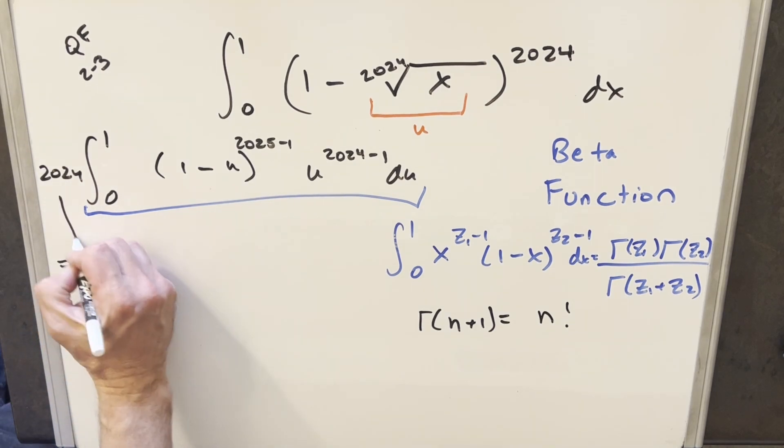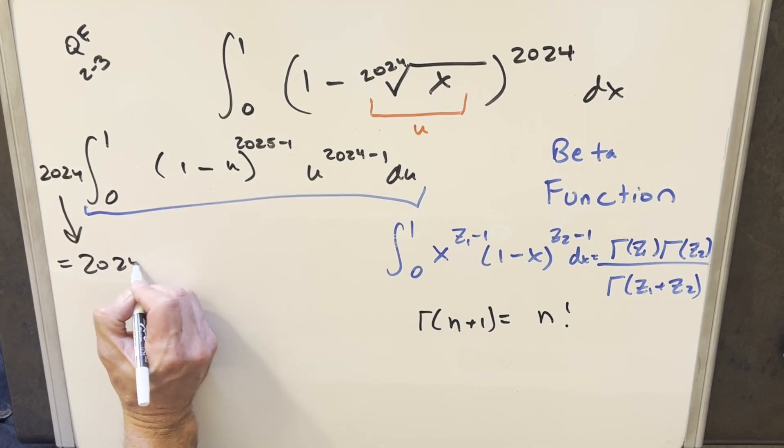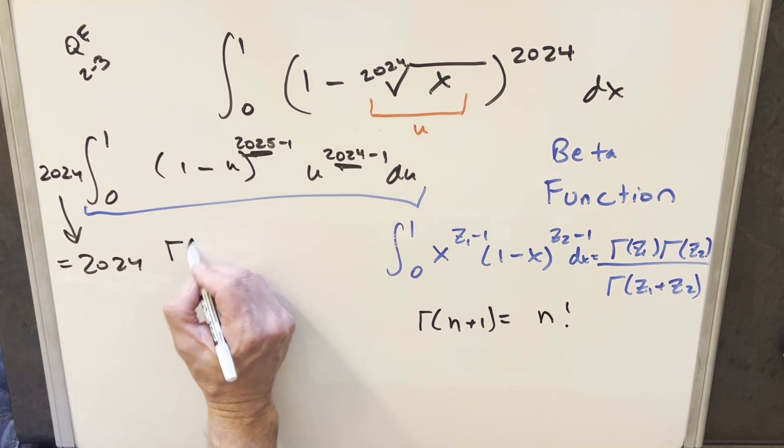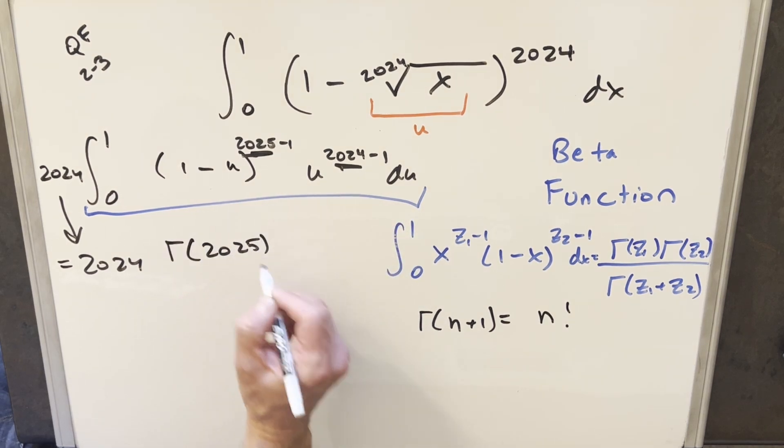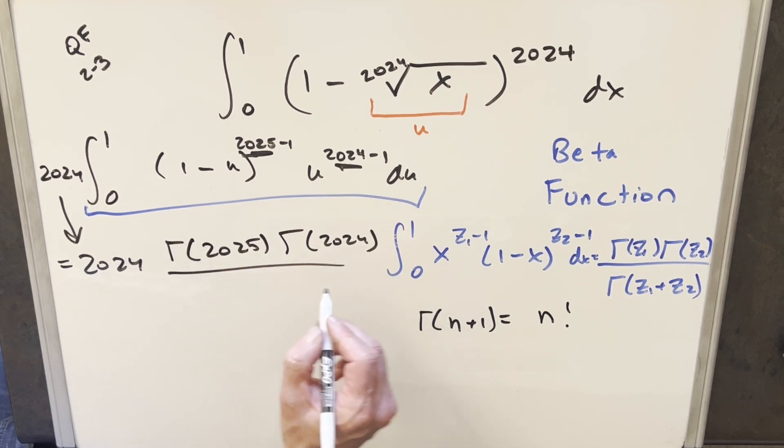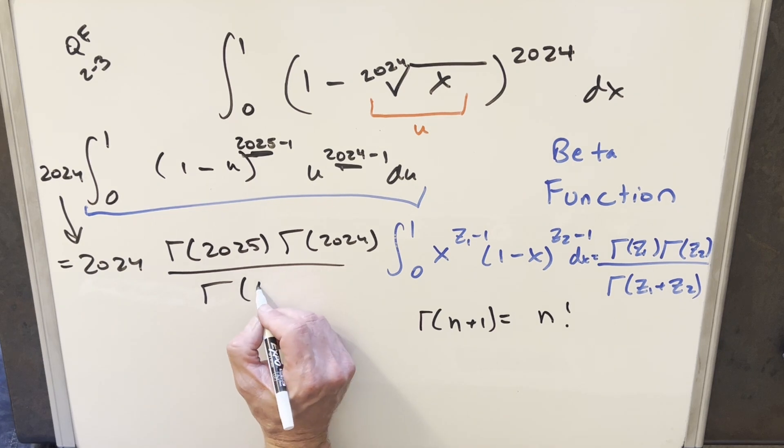And so going ahead with this, we'll just bring this piece down. So we have our 2024 in front. And then here, this is our z1 and this is our z2. So this is going to become gamma of 2025 times gamma of 2024. And then now we just add these two together. So in the denominator, we're going to have z1 plus z2. So it's going to become gamma of 4049.